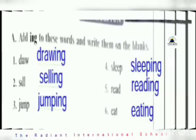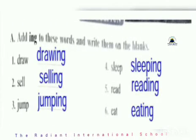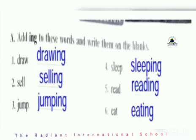Next is Worksheet 3. Add -ing to these words and write them on the blanks. This is the same exercise we did last time in the grammar worksheet. Word is draw — D-R-A-W-I-N-G, drawing. Then S-E-double-L, sell — S-E-double-L-I-N-G, selling. Third is jump — J-U-M-P-I-N-G, jumping. Fourth is S-L-double-E-P, sleep — S-L-double-E-P-I-N-G, sleeping.